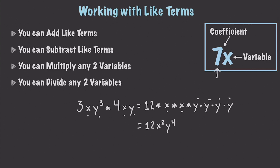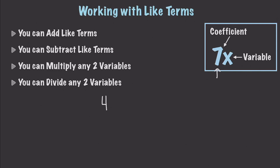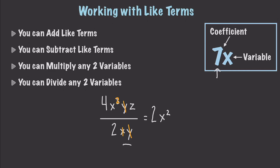Now let's talk about division. Let's say we have 4x³yz divided by 2xy. We can cancel out an x from numerator and denominator, reducing x³ to x². We can also cancel the y. Then we divide 4 by 2 to get 2. So the final answer is 2x²z.